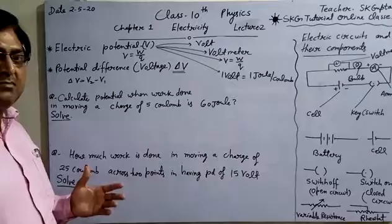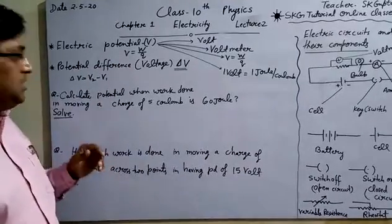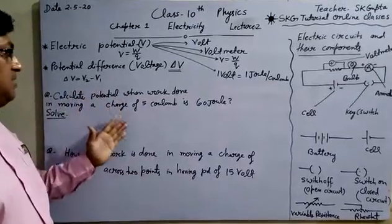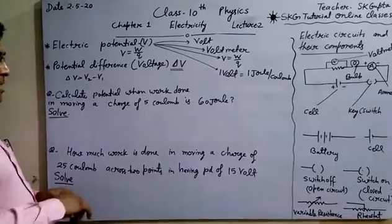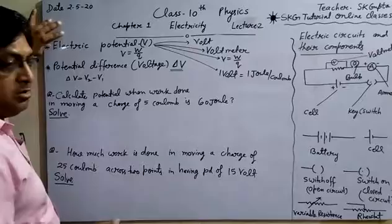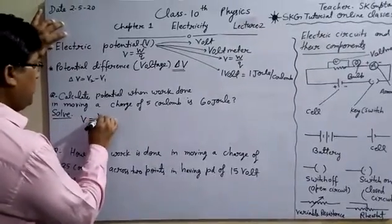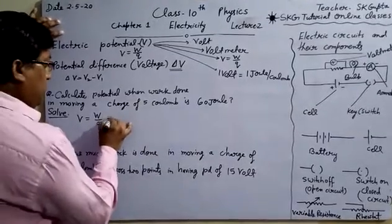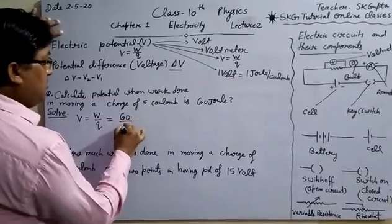Next we have to solve some numerical problems based on potential difference and potential. First, calculate potential when work done in moving a charge of 5 coulomb is 60 joule. We know V is equal to W upon Q. So by putting value of work, that is 60, and amount of charge is 5 coulomb, we get 12 volt. Answer is 12 volt.